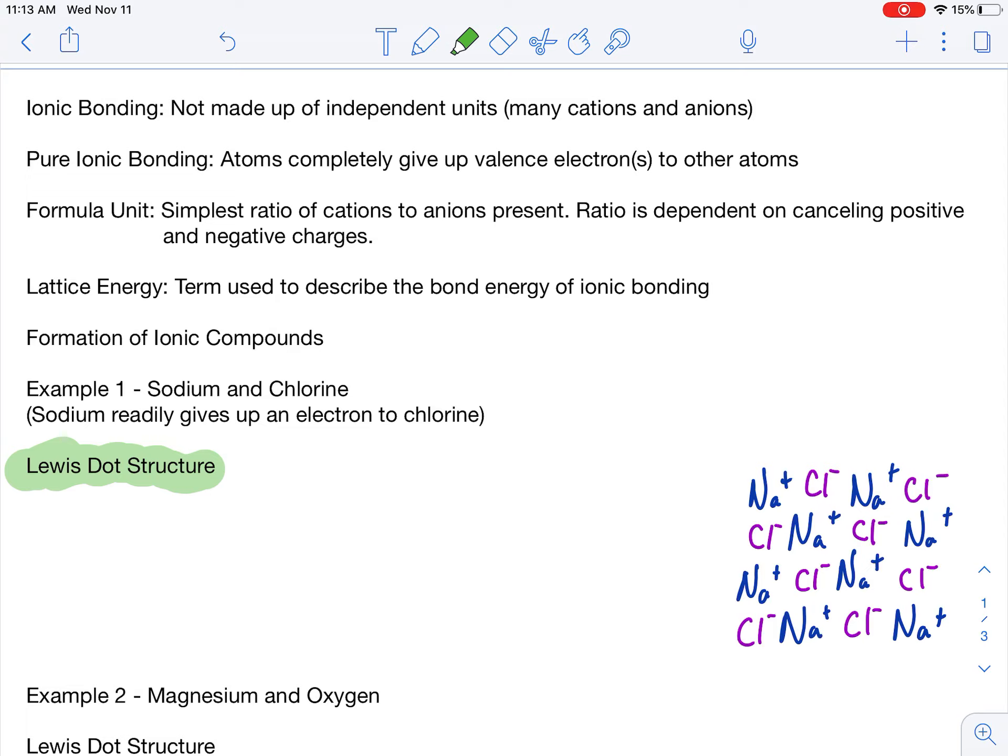So ionic bonding, as we know, it's not made up of individual units. We have many, many cations and anions. Pure ionic bonding is when an atom gives up a valence electron to another atom. We're going to show you how that looks today. And we have a new term called a formula unit. So a formula unit is the simplest ratio of cations to anions present. The ratio is dependent on canceling positive and negative charges, which I will show you in a heartbeat.